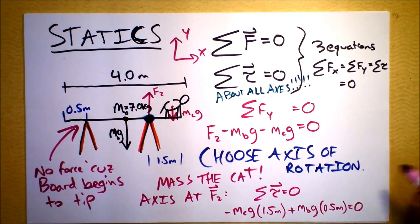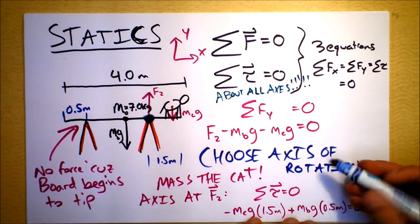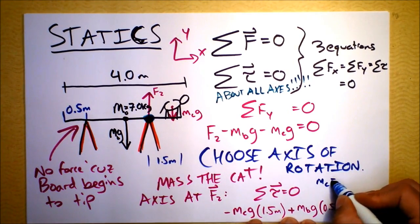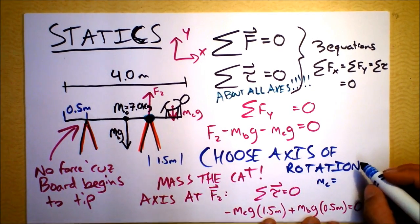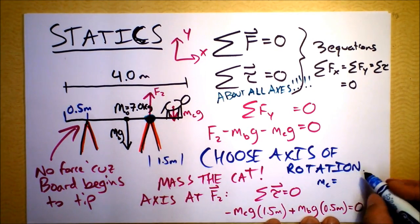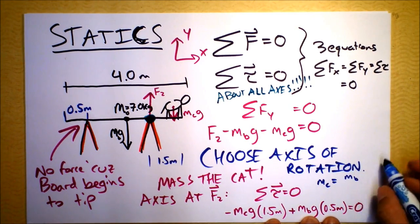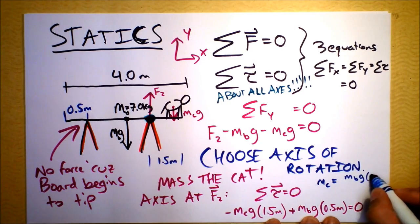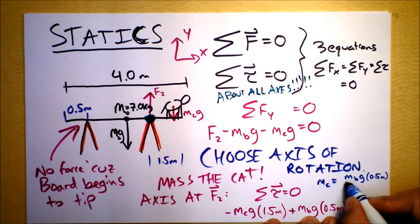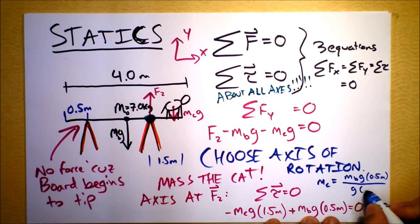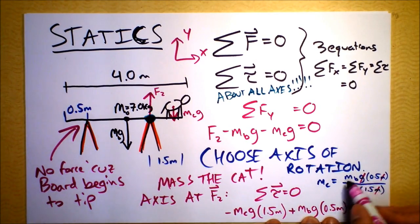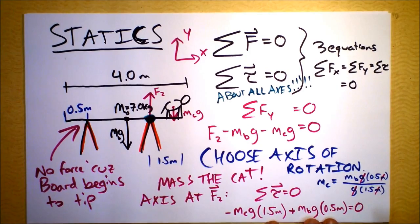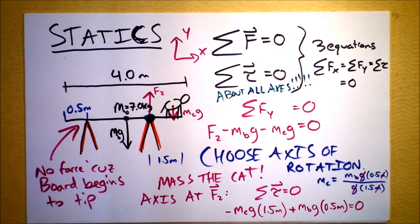So we can solve this for the mass of the cat. I'm going to add this term to both sides, divide by G, and divide by 1.5. The cat mass equals the mass of the board times G times 0.5 meters divided by G and 1.5 meters. So the meters cancel out - that's fun - and G cancels out, so our units are mass. Kilograms is our unit, and you can plug that in and find out the mass of the cat.